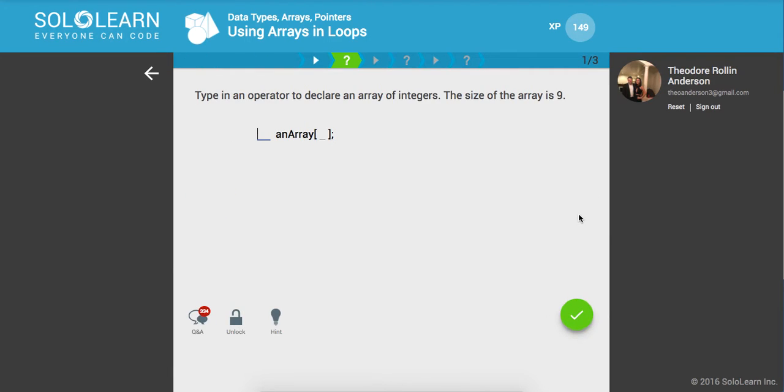Type in an operator to declare an array of integers, and the size of the array is 9. So, we'll say integer and array, and we want to say 9 is how many integers we want to store.